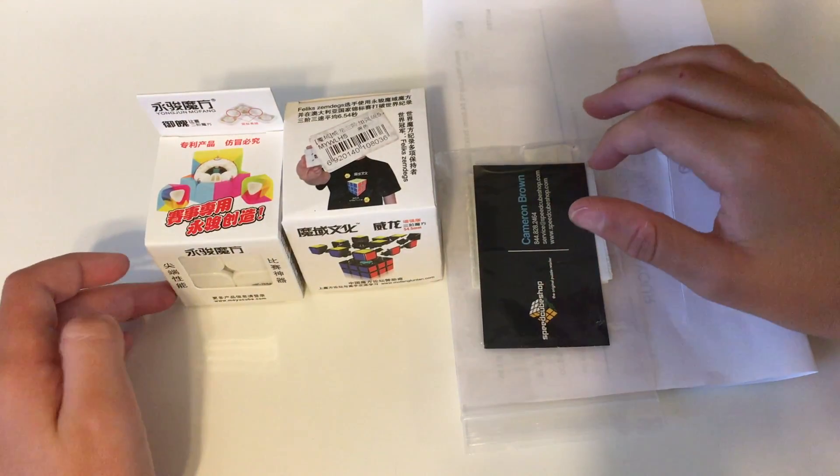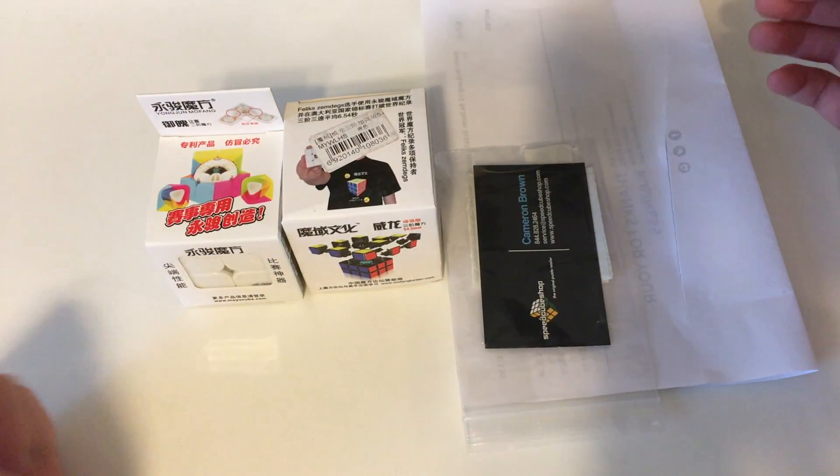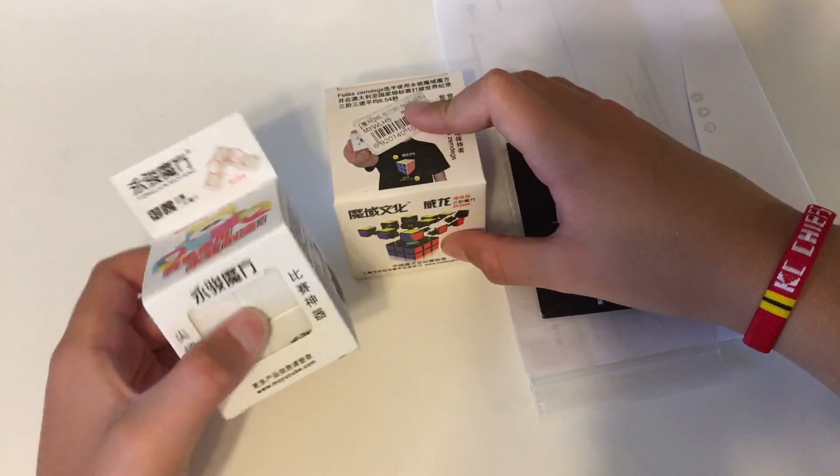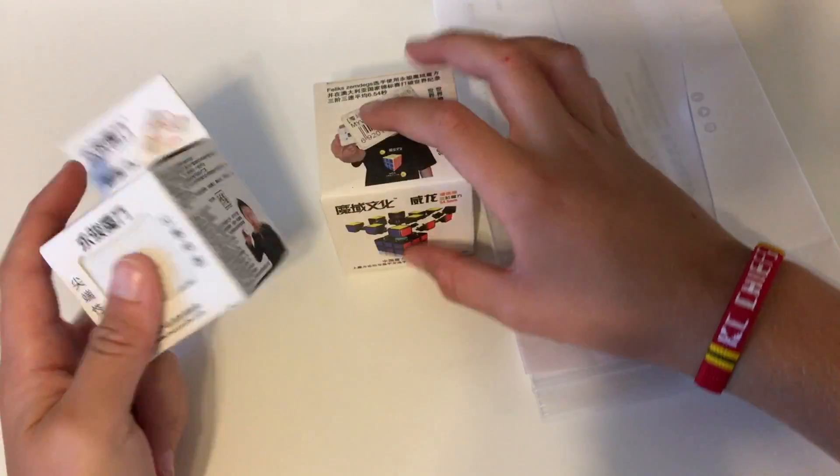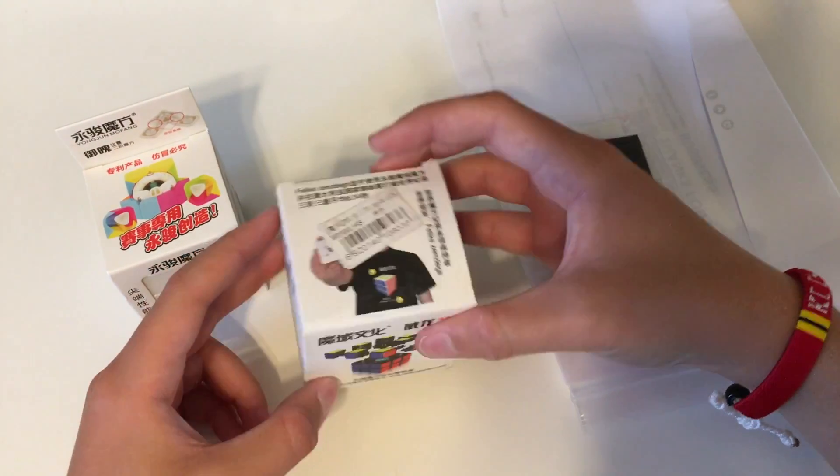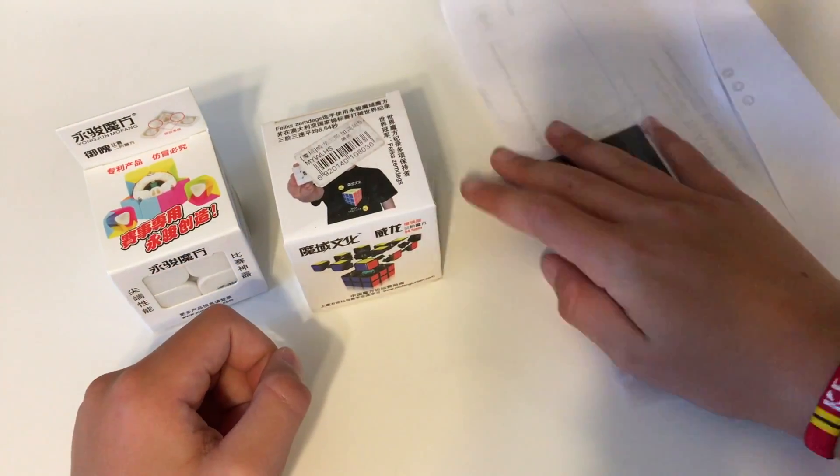Hey guys, what's up? It's the California Cuber and today we have an unboxing from SweetCubeShop.com. I ordered two cubes: the YJ Yupo in stickerless pink and the Mini Moyu Wayalong 54.6 millimeters. Let's just get into it.